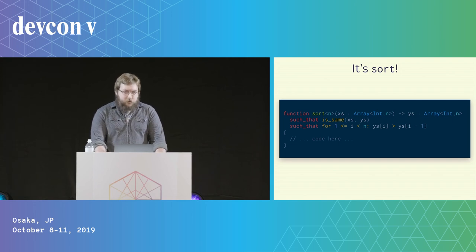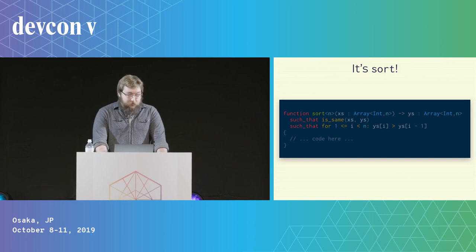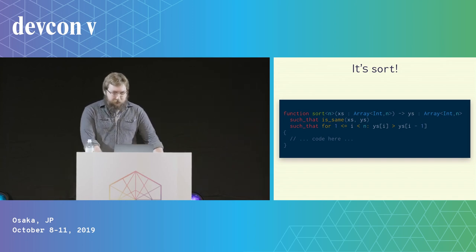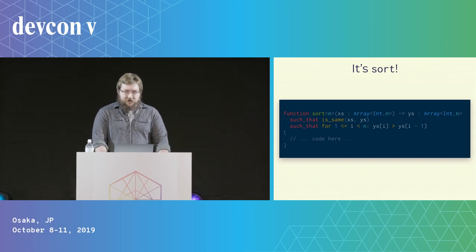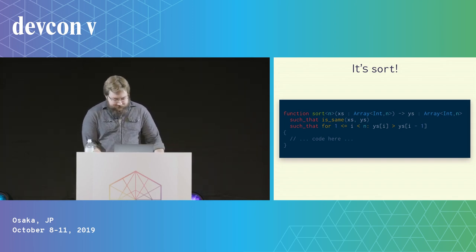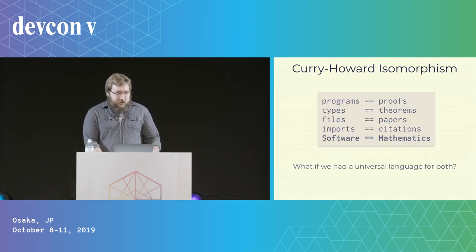Which is great because compile time is when you, the programmer, are in the process of fixing your code. This is really nice for immutable blockchains where a runtime error means your code is broken, no one can get their money out, and you can't fix it because you deployed your code to an immutable platform. But dependent types are useful for so much more.